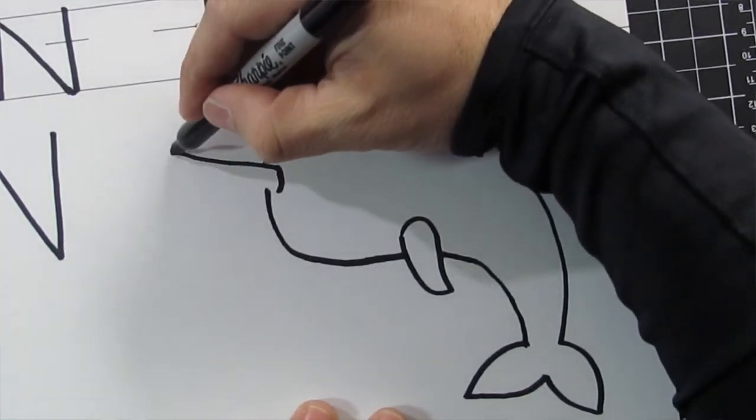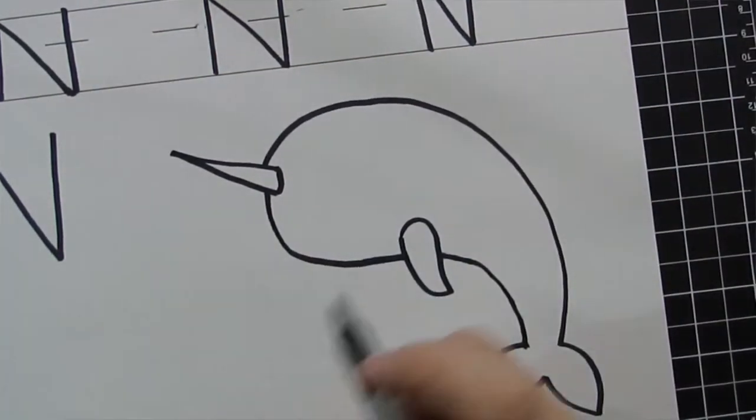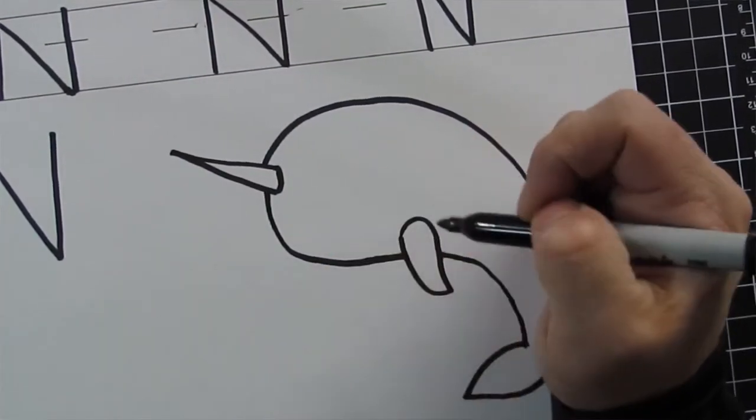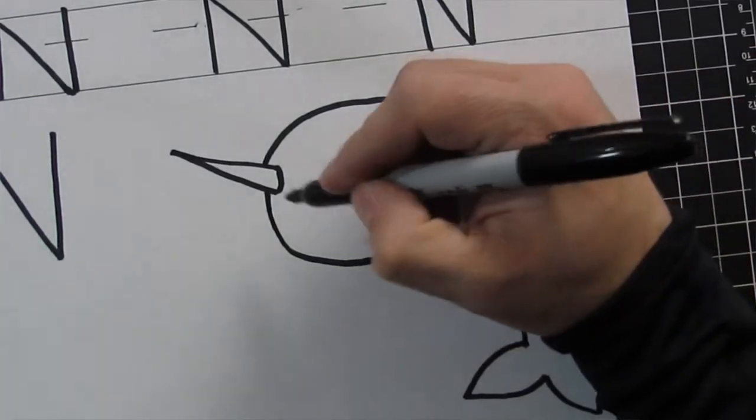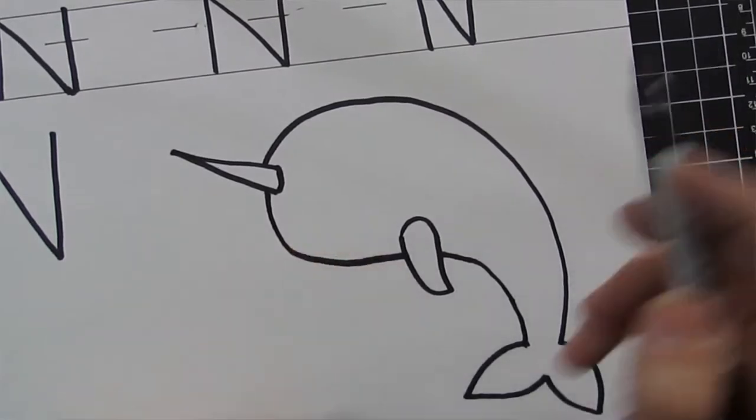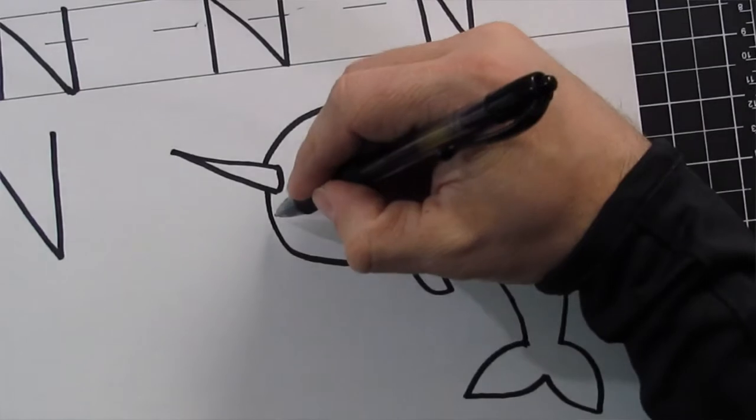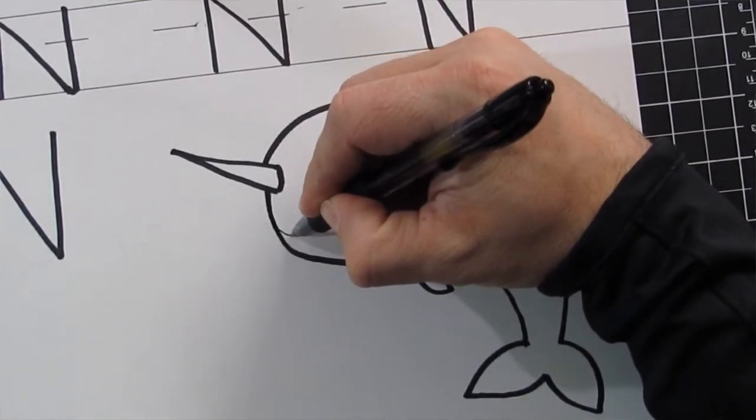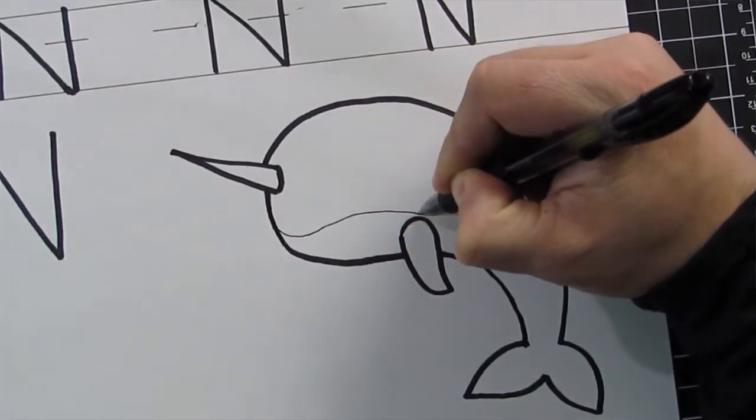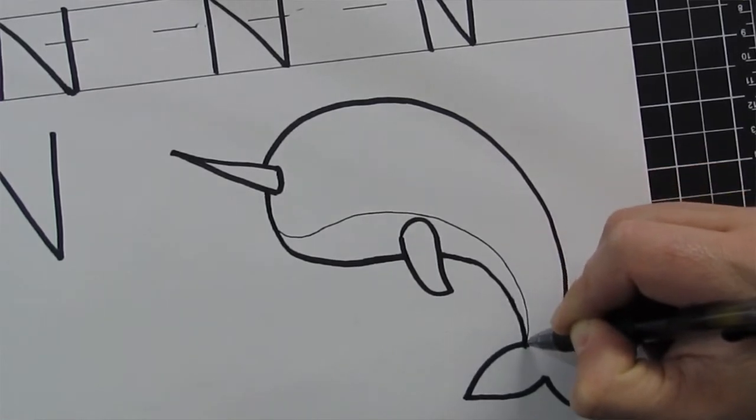And then straight back down and connect to the bottom part of that line. It almost looks like a little party hat that the narwhal is wearing. All right, now the belly is going to be two different colors. It's going to be darker up top and lighter on the bottom. So I'm going to take a skinnier pen and just draw a little line. Again, kind of like the dolphin's belly that we did, it's lighter on the bottom.